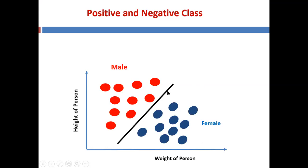The decision boundary performs the classification such that any instance lying above it is classified to the male class, and any instance lying below it is classified to the female class. This positive and negative class concept is used in the binary classification problem. A binary classification problem is when classification is performed for only two classes, two labels, or two target variables.